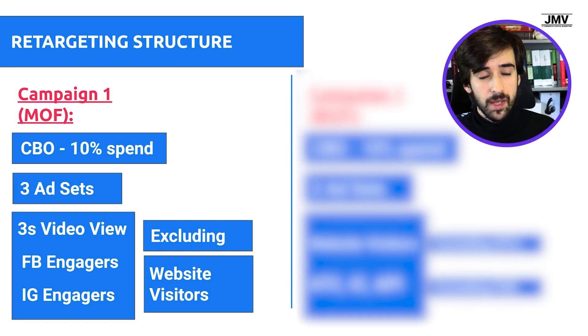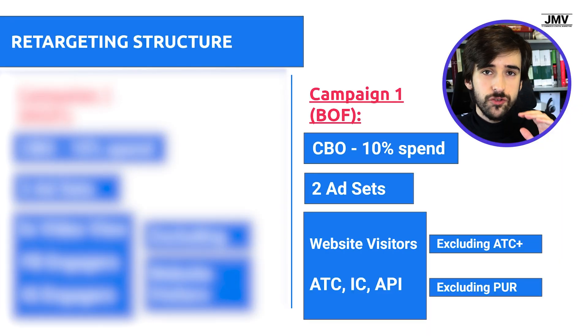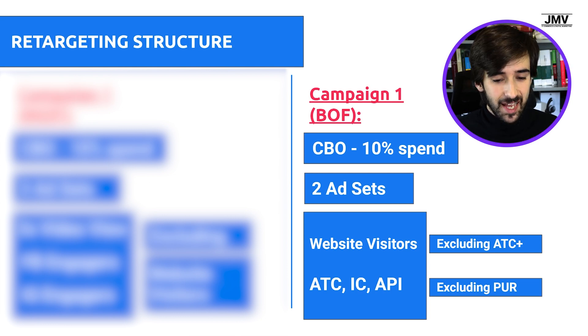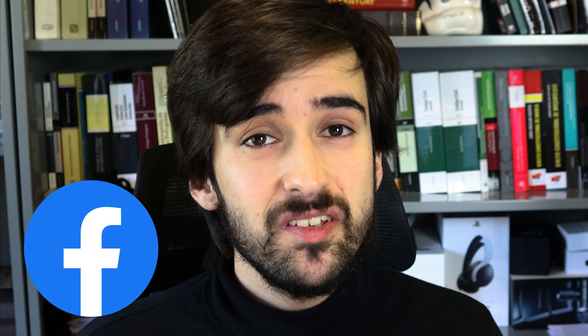Inside the middle of funnel campaign, we have three ad sets: one for the three-second video view custom audience, one for the Facebook engagement custom audience, and one for the Instagram engagement custom audience. Each of these ad sets should have all website visitors 90 days as an exclusion. For the bottom of funnel campaign, we want two ad sets — one for website visitors 60 days, and another for add to cart, initiate checkout, and add payment info 60 days. For the website visitors ad set, exclude the custom audiences included in the other bottom of funnel ad sets, and in the final ad set, exclude purchases 90 days. This splits the lowest and highest value parts of bottom of funnel traffic, making it easier for Facebook to optimize budget allocation.